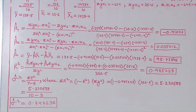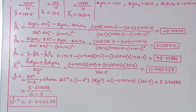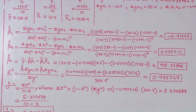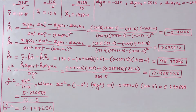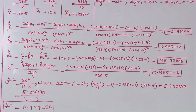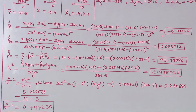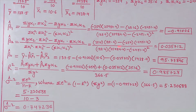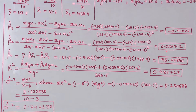β̂₁ can be calculated using the formula: (σyx₁·σx₂² − σyx₂·σx₁x₂) divided by (σx₁²·σx₂² − (σx₁x₂)²). After substituting the values, we get β̂₁ = −0.91006. β̂₂ can be calculated using the formula: (σyx₂·σx₁² − σyx₁·σx₁x₂) divided by (σx₁²·σx₂² − (σx₁x₂)²). We get β̂₂ = 0.035712.